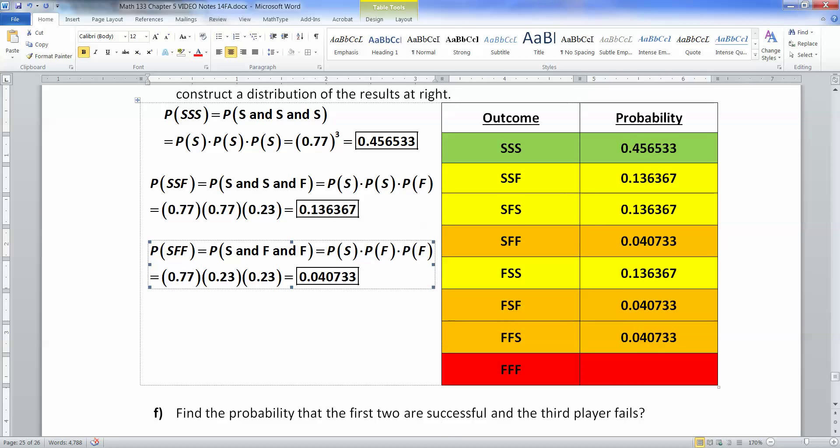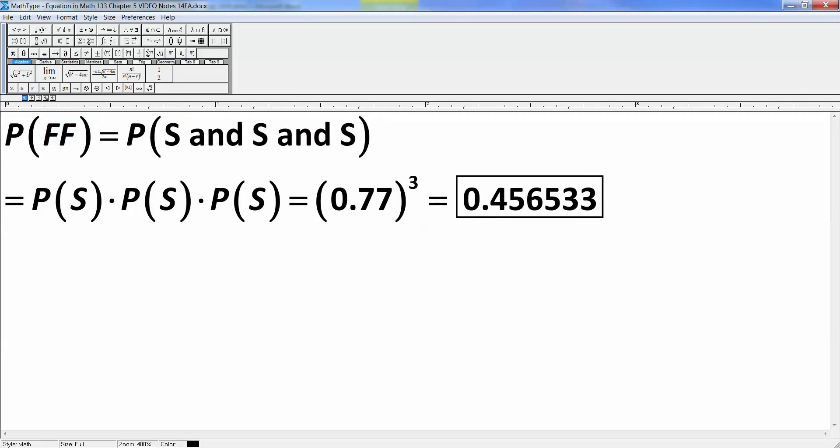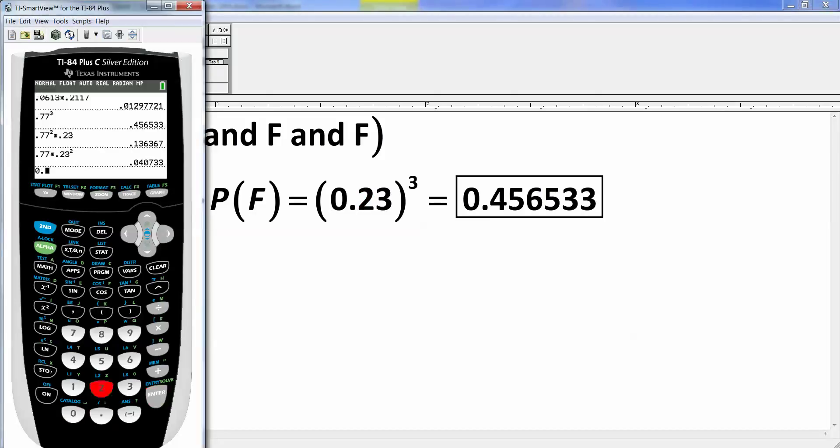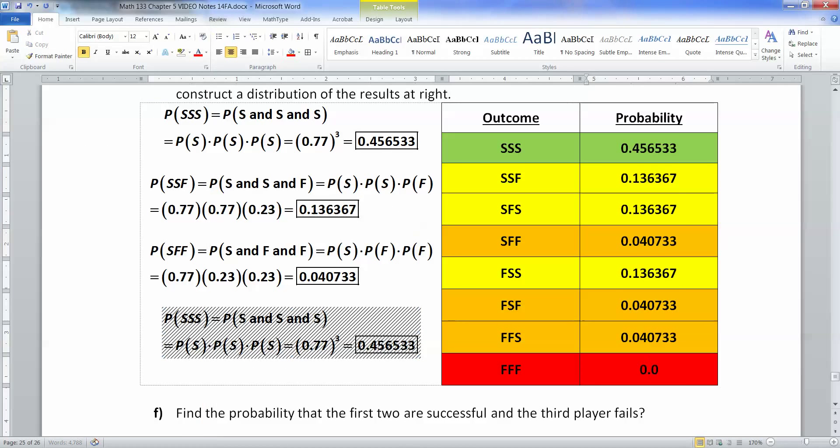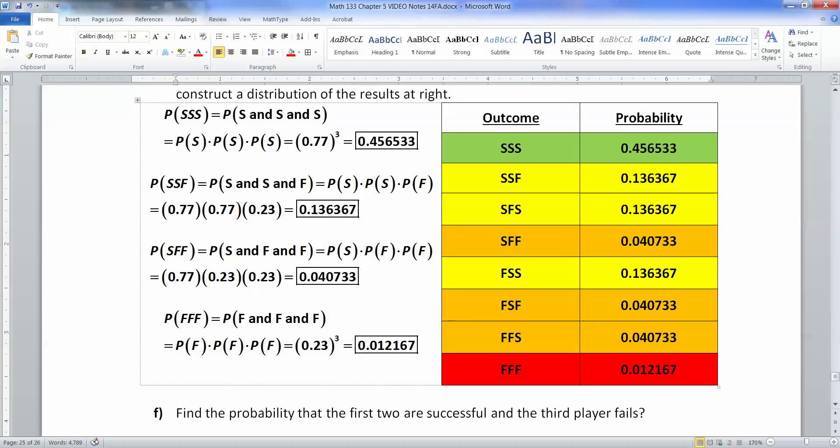And then the last but not least would be the probability of fail, fail, fail. The bad one. The Shaquille O'Neal of this problem because of course we all know he was terrible at free throws. So that'd be failure, failure, failure. That would be 0.23 to the third power, which would be 0.23 carat button. That's above your division. Three. Enter. That's 0.012167.